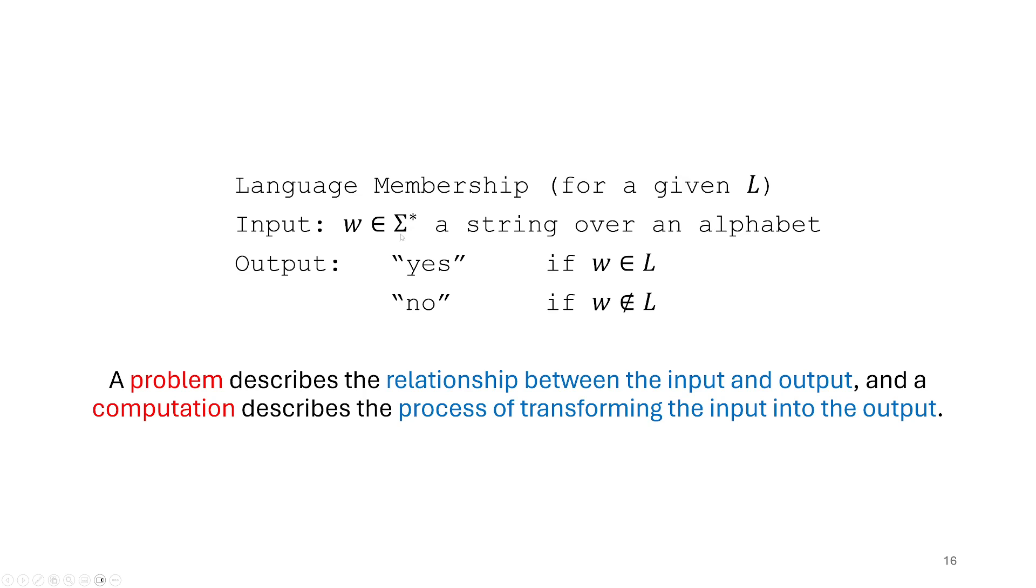And here I'm being agnostic about what that alphabet might be. So just some string over this alphabet. And the output is going to be yes, if that string is in the language that we've got defined for this particular problem, or no, if it's not. And that makes it a very simple kind of problem. It's a kind of problem called a decision problem.